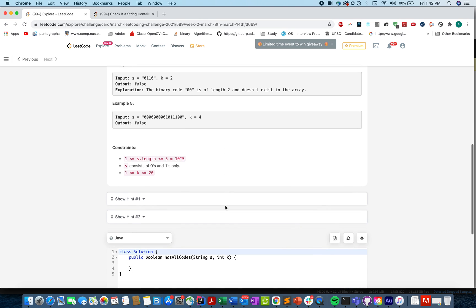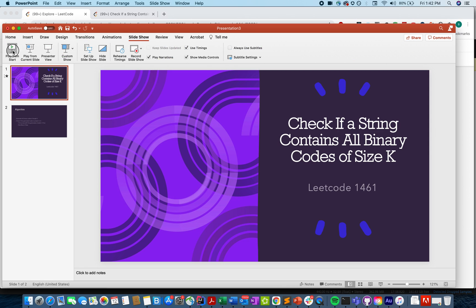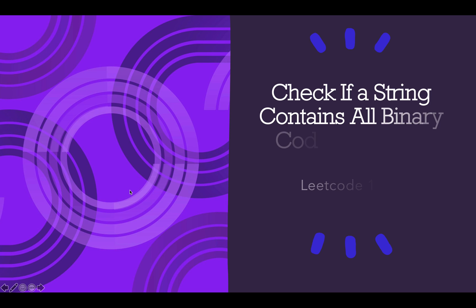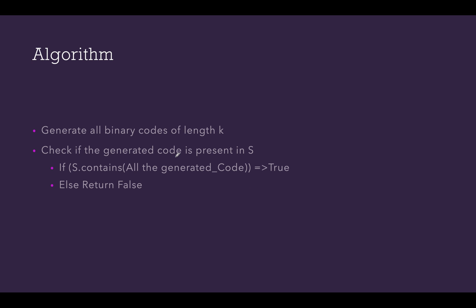So let's quickly understand the algorithm that I have created for this. This is a naive algorithm that states to generate all the binary codes of length k and check if the generated code is present in s. If s contains all the generated codes then we return true from our solution. Otherwise if we find at any step that the generated code is not part of string s we abort the process and return false.